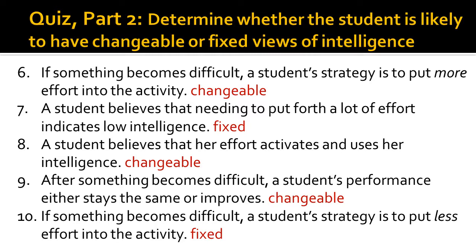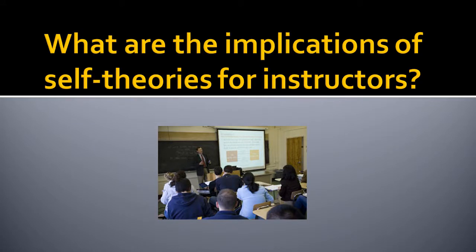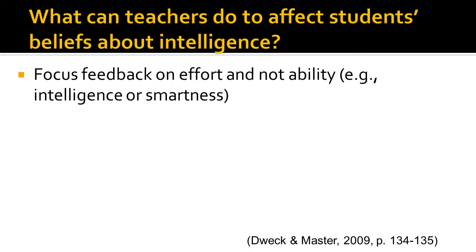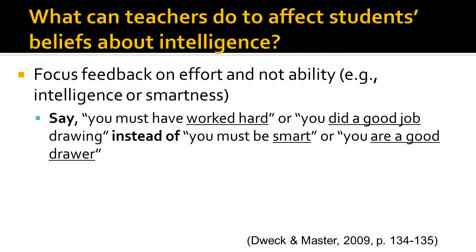I hope that you understand these concepts well at this point. Now let's use these concepts to answer the question: what are the implications of self-theories for instructors? What can teachers do to affect students' beliefs about intelligence? For one thing, they can focus their feedback on effort and not on ability, such as intelligence or smartness. They should say to students, 'You must have worked hard,' or 'You did a good job drawing,' instead of 'You must be smart' or 'You are a good drawer.' This might seem simple, but I can tell you from experience that it's hard to do.